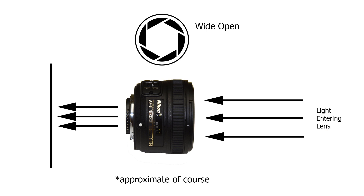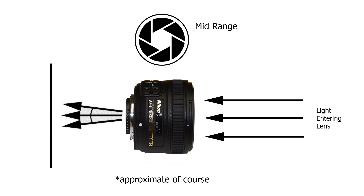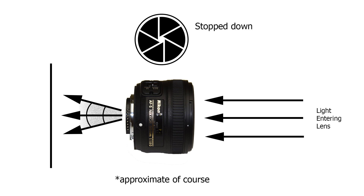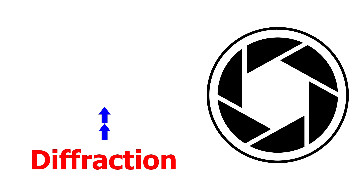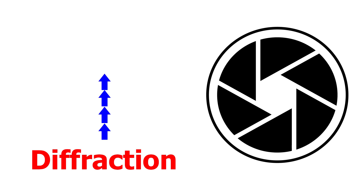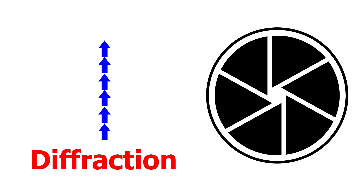What causes diffraction? To put it as simply as possible, when a light wave hits an obstacle like the edge of an aperture blade, it starts to disperse. This has the effect of changing the various wavelengths so they have to travel different distances, and they begin to interfere with each other. When this happens, there is a loss of sharpness. The bottom line is that the smaller the opening, the more the light diffracts, and the more softening you see in your photos.